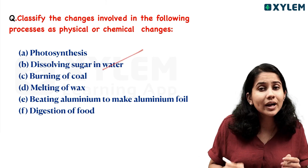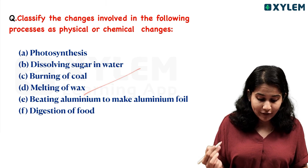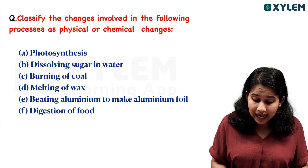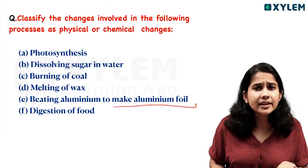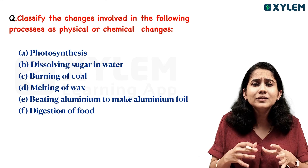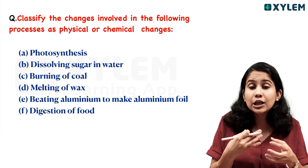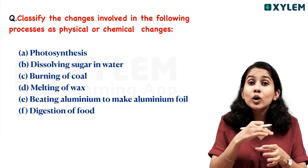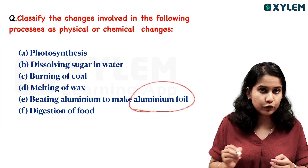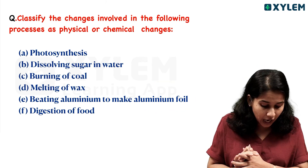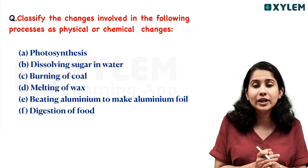The items to classify are: photosynthesis, dissolving sugar in water, burning of coal, melting of wax, beating aluminium to make aluminium foil, and digestion of food.